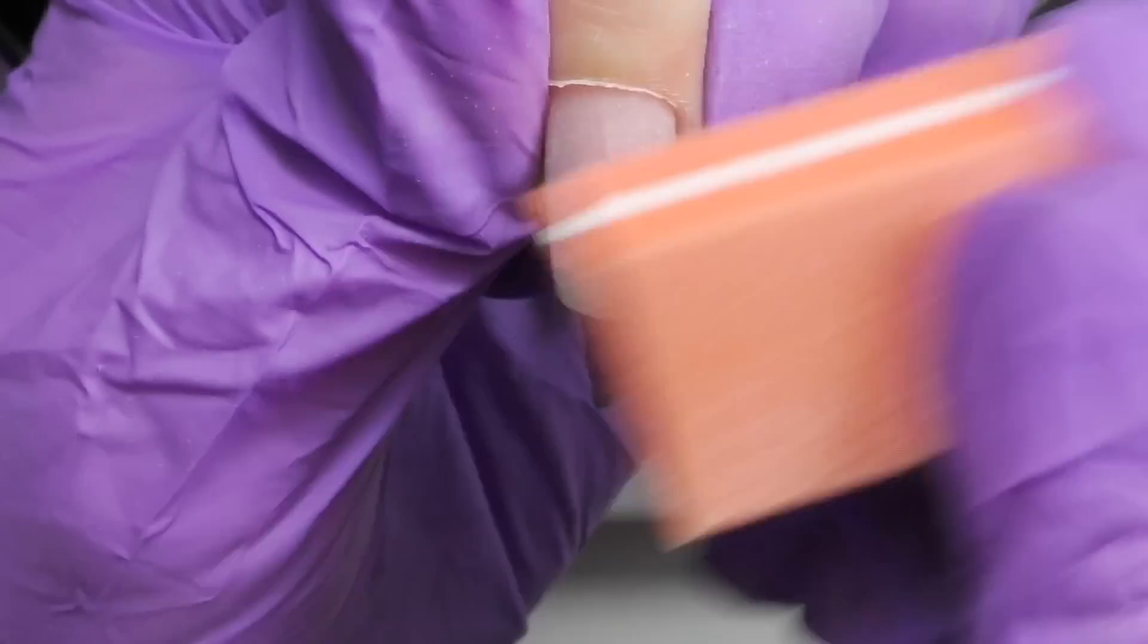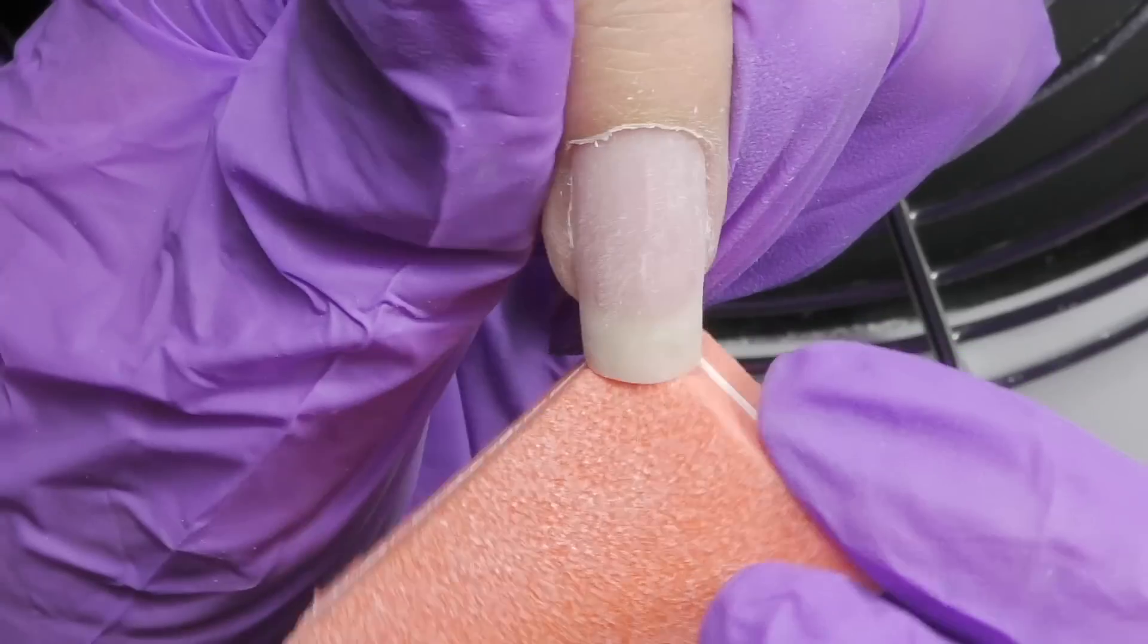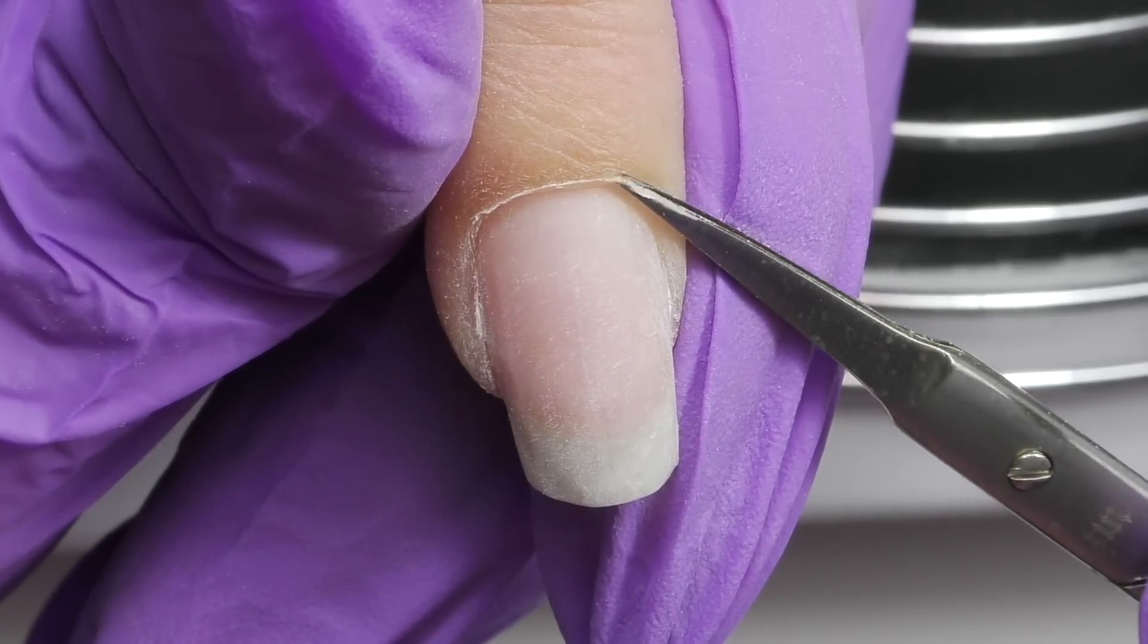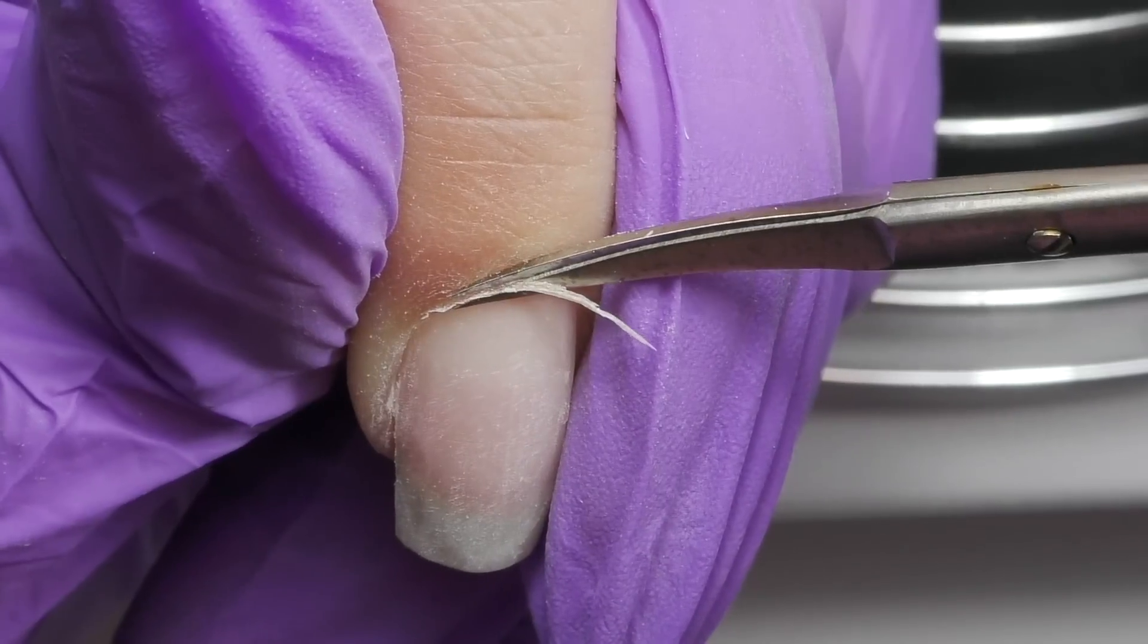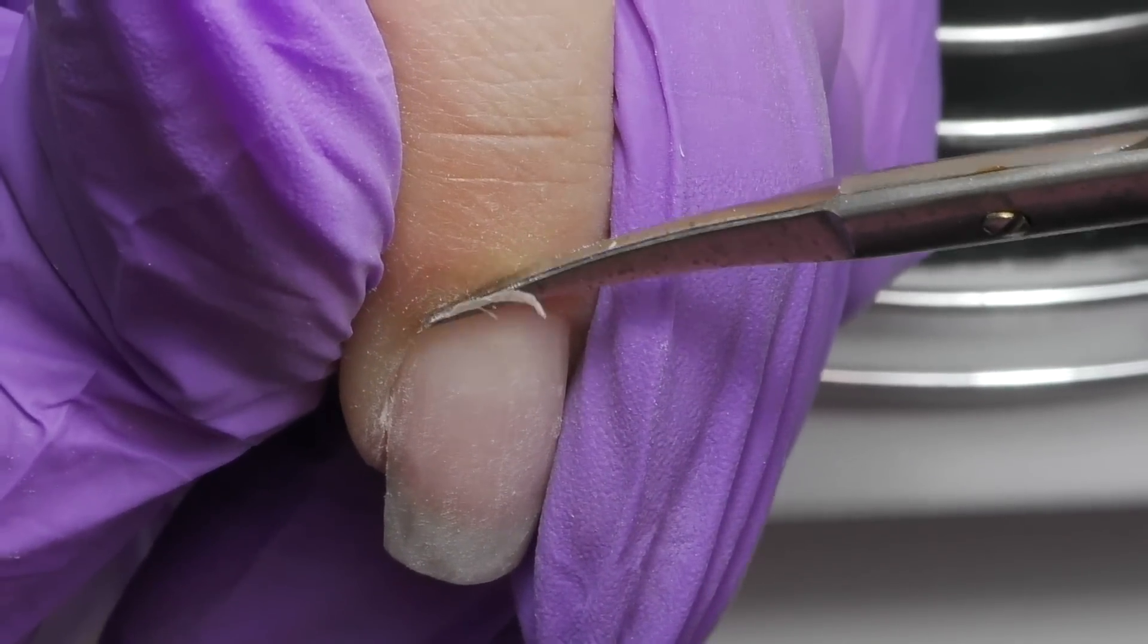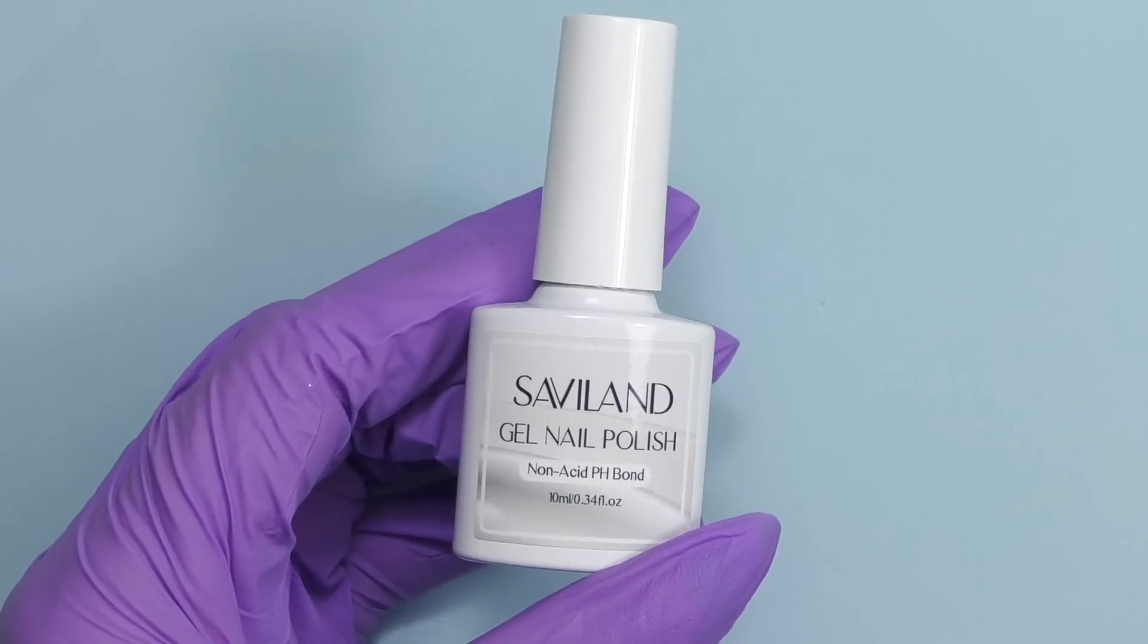Then we need to take off the surface shine, and if we have some old product leftovers, I'm also going to do that with 180 grit buffer. Make sure that you file the nail underneath as well, because if you've been filing the shape, there might be something left underneath the nail, and finish the manicure with the scissors.